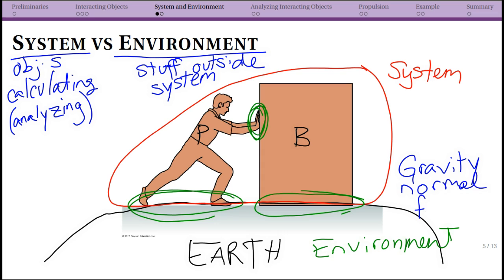So in this case I have three forces that are actually due to my system interacting—or three categories of forces—due to my system interacting with the environment, and I have one pair of forces within my system due to different objects in my system interacting with each other.